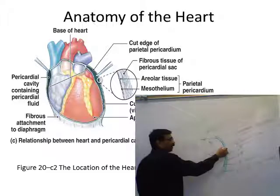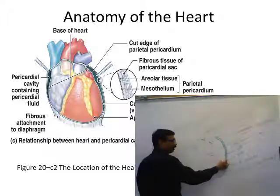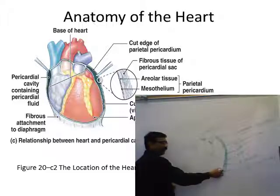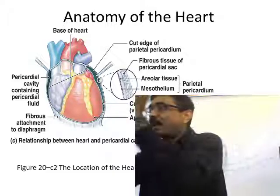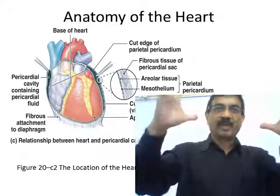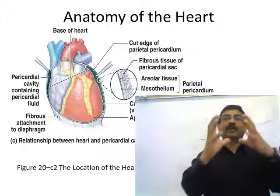Sometimes more fluid can accumulate in that pericardial space. If more fluid accumulates, the pressure around the heart will increase, and the heart will not be able to expand enough. That will prevent the heart from expanding and blood will not be able to get in. That is called cardiac tamponade — increased pressure around the heart that prevents the expansion of the heart.